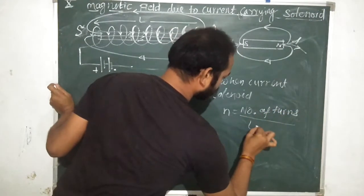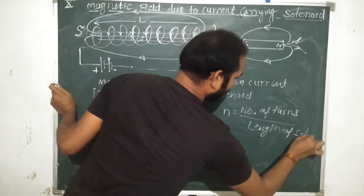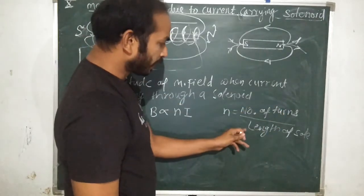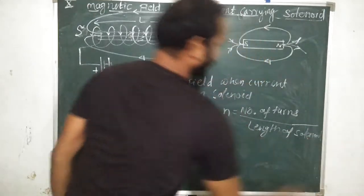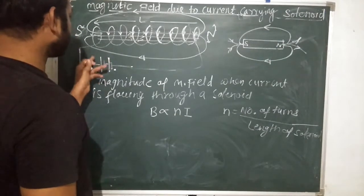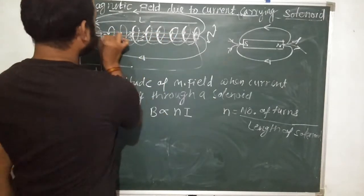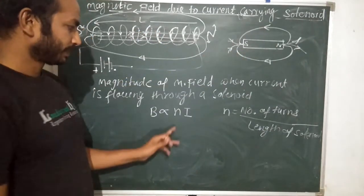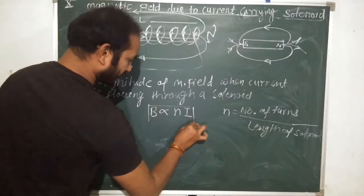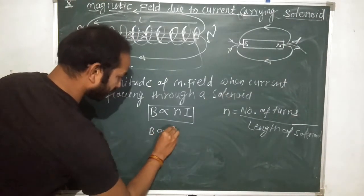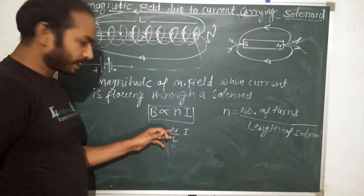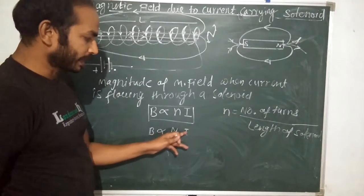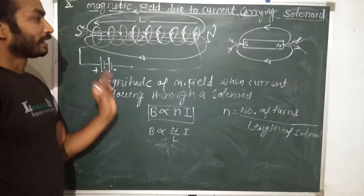If we need a single coil we use number of turns, but for a solenoid we use number density — that is, the number of turns n divided by the length of the solenoid L. If we increase the current, the magnetism also increases. Inside the solenoid the magnetic field is uniform because all field lines are in parallel form, and it behaves like a bar magnet.